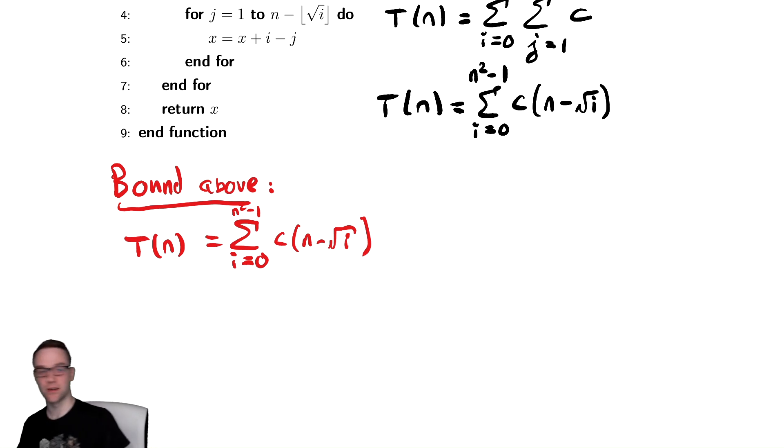The reason this example is different than our last one is, one, we're going to ignore the floor function, and two, this is a decreasing summation. For decreasing summations to bound them above, we replace each term with the biggest, but the biggest term occurs at the bottom bound of the summation. It's decreasing, so smaller values of i will make it bigger.